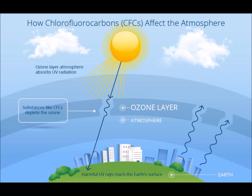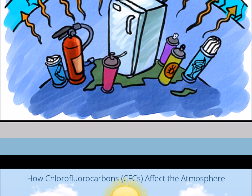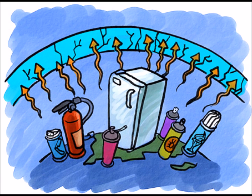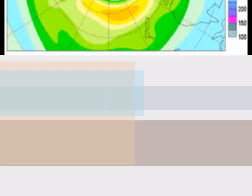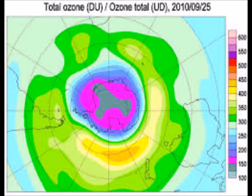Ozone is formed when an ozone molecule is broken down by ultraviolet radiation, forming two ozone atoms. Each of these ozone atoms joins a separate ozone molecule, forming O3. The role of the ozone within the ozone layer is to absorb harmful rays from the sun.